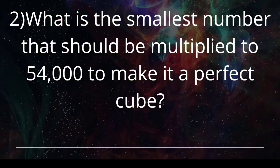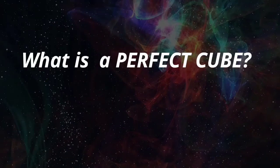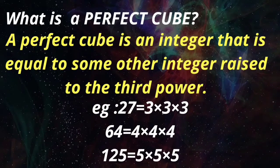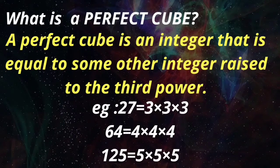The second question is: what is the smallest number that should be multiplied to 54,000 to make it a perfect cube? First, a perfect cube is an integer that is equal to some other integer raised to the third power. For example, 27 can be written as 3 x 3 x 3, 125 as 5 x 5 x 5, and 64 as 4 x 4 x 4.